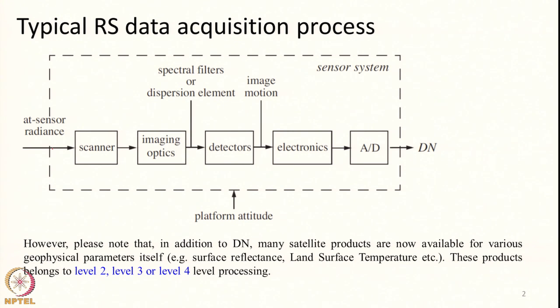From that radiance, as users we will get images out of it — most satellite sensors will provide us images. Using that image we have to retrieve back the reflectance of the surface in order to use it in further applications. First we will see how an image is formed in the remote sensing system. The radiance reaching the sensor is essentially collected by scanning geometry, imaging geometry, detectors and all those things.